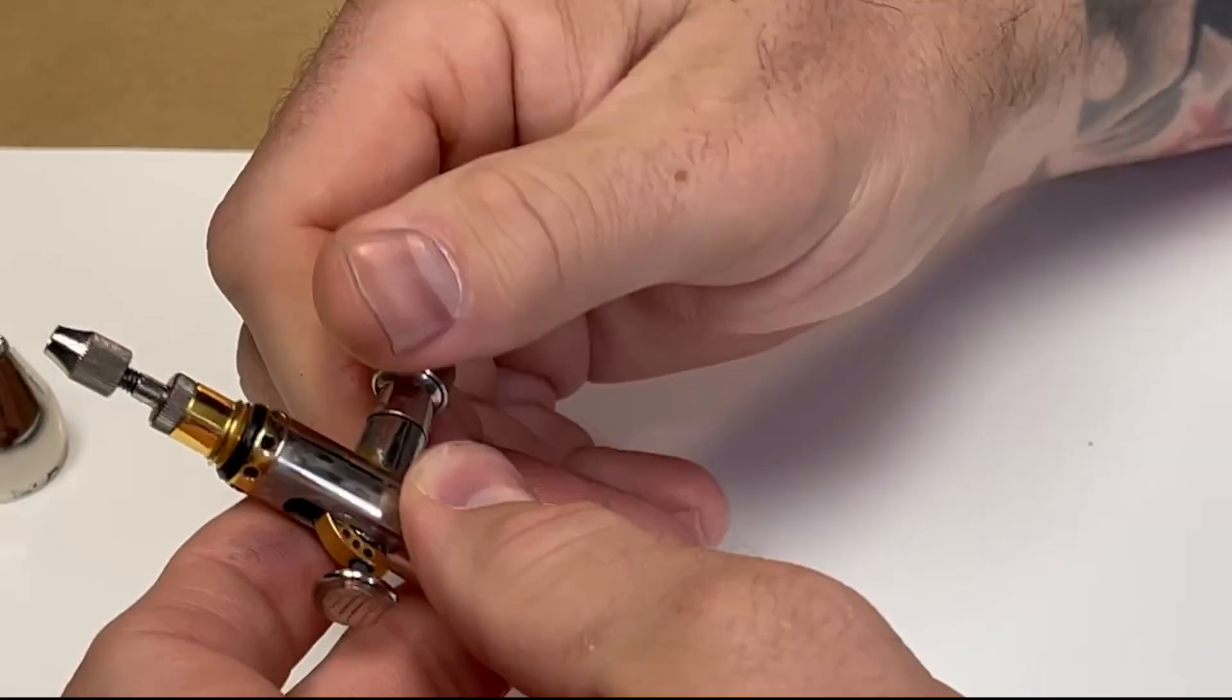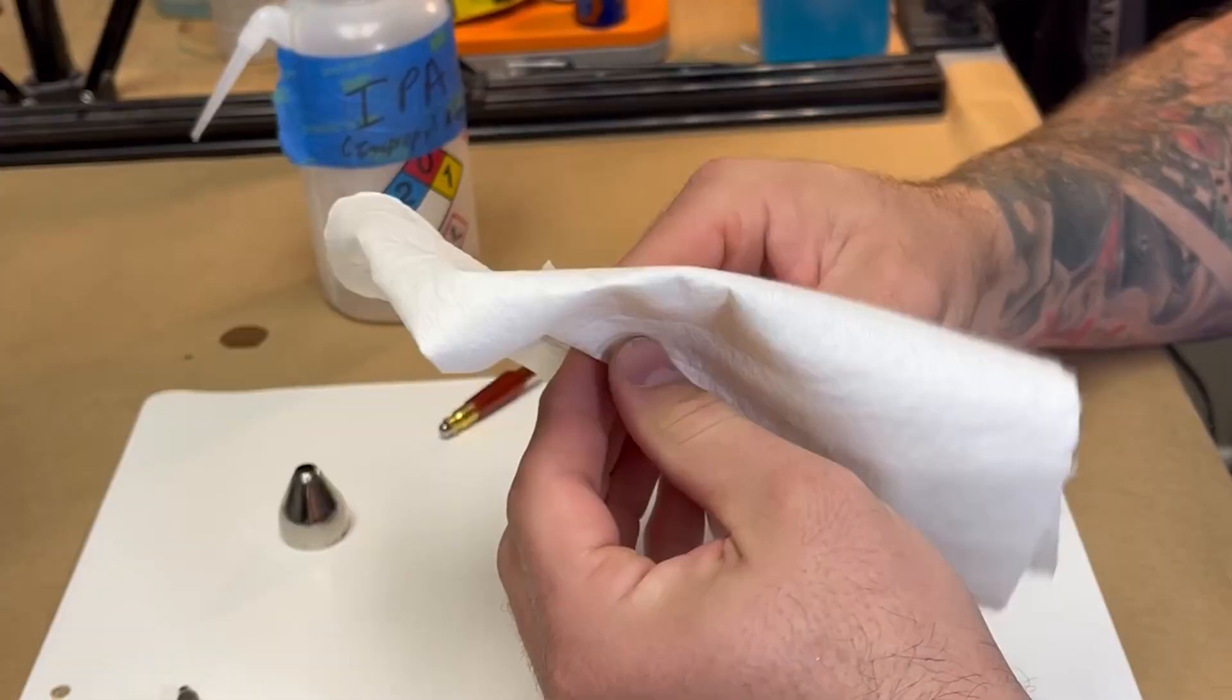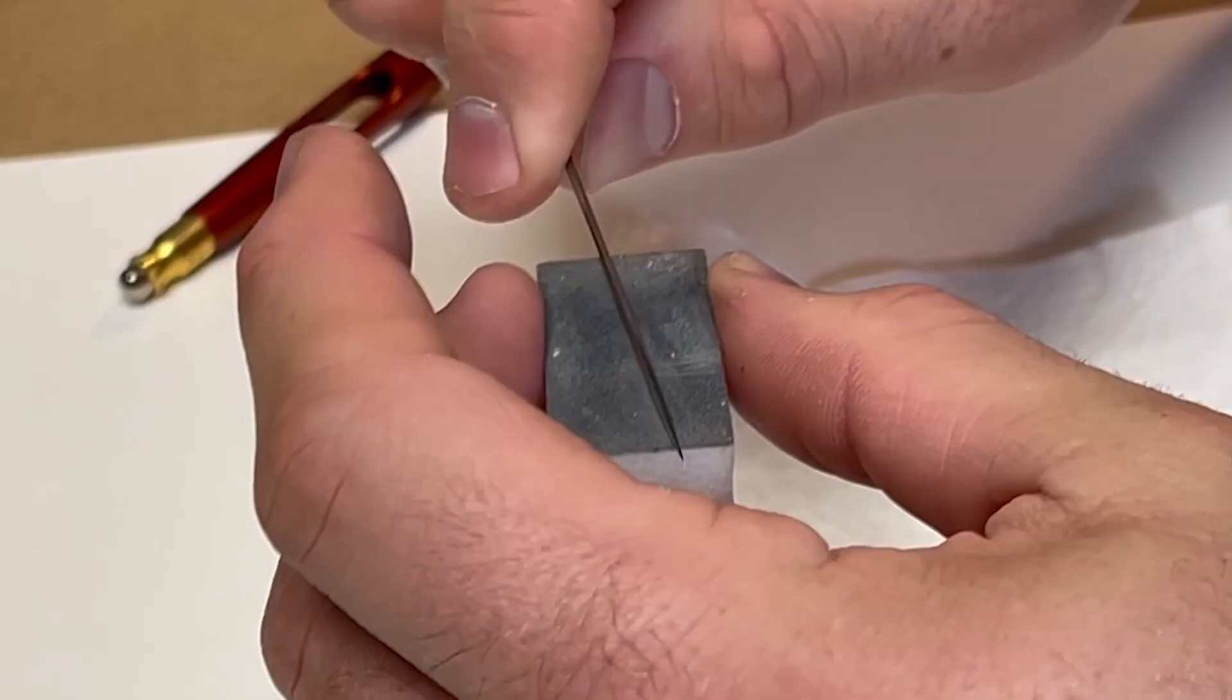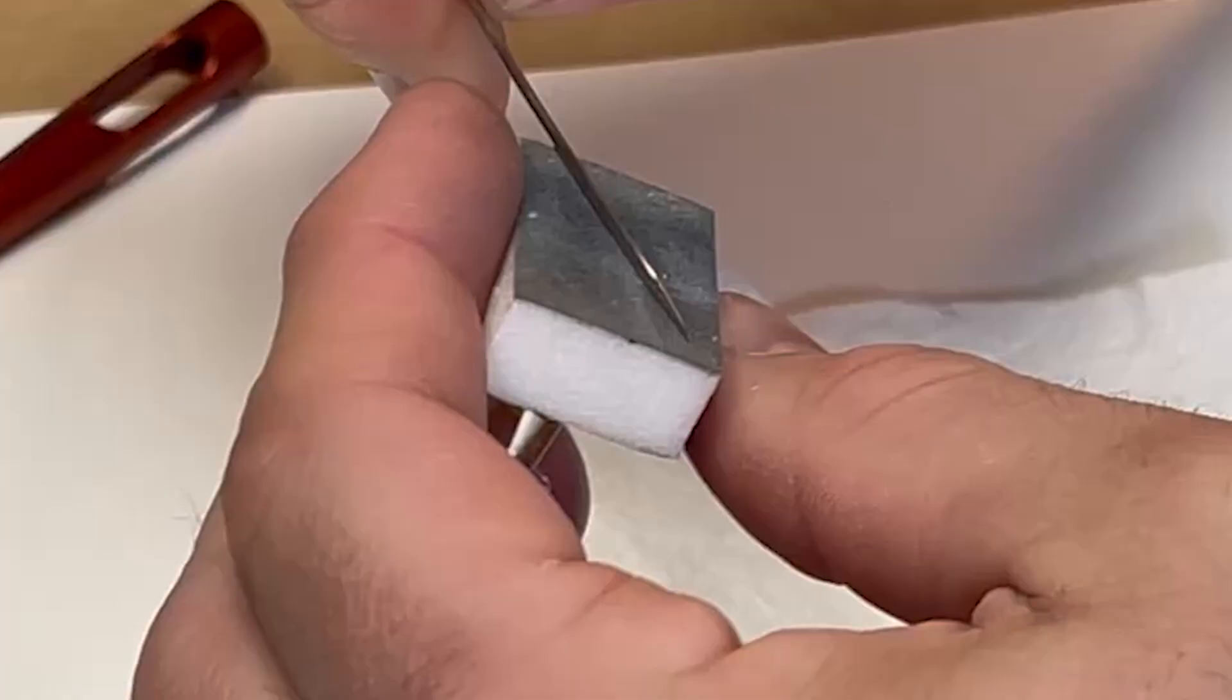Take your airbrush apart, following the manufacturer's instructions. Using a cleaning solution—in this case I'm using isopropyl alcohol because I was using Tamiya paints through this thing—wipe down the needle. Give it a light sanding if you need to get the extra crud off there. Make sure you use a super high grit sandpaper or sanding block when you do this.